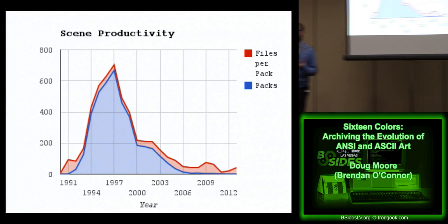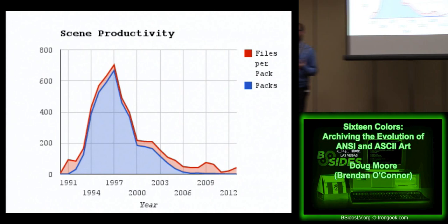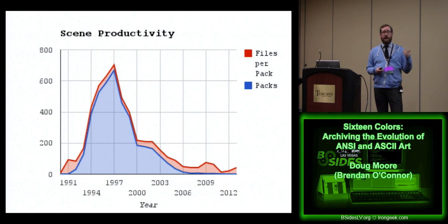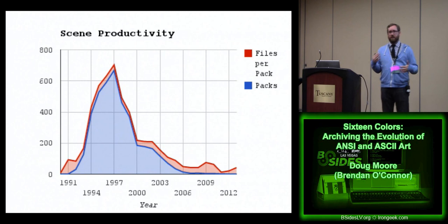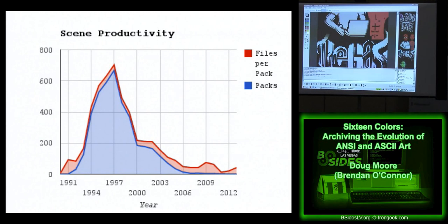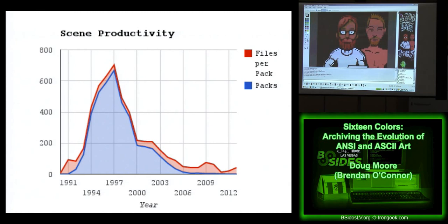The ANSI scene was really a quick rise and fall. In 1990 we see the first pack releases. By 1997 we peak at about 700 packs in that year, and it quickly falls off. It's not surprising — the web was released, people started getting real internet access, and bulletin boards just weren't as relevant. DOS wasn't as relevant because people were using Windows, Linux, Mac OS. So it just doesn't have the level of relevance it once did and starts to plummet.